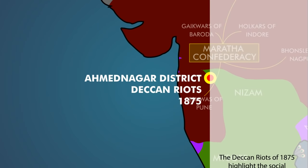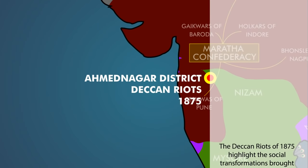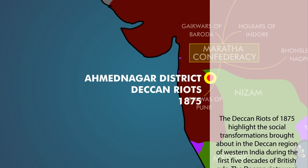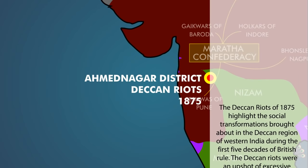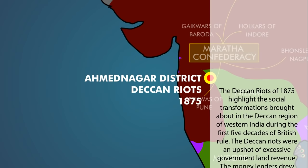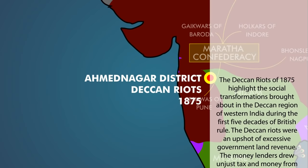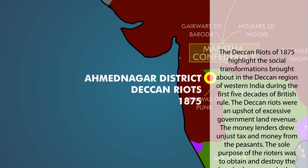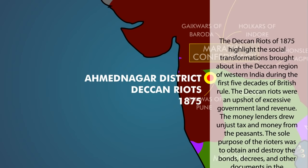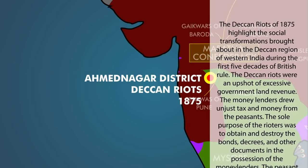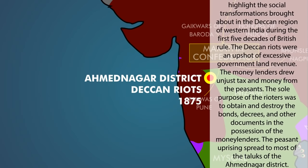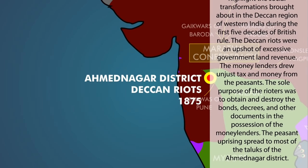The Deccan riots of 1875 highlight the social transformations brought about in the Deccan region of western India during the first five decades of British rule. The Deccan riots were an upshot of excessive government land revenue. The money lenders drew unjust tax and money from the peasants. The sole purpose of the rioters was to obtain and destroy the bonds, decrees and other documents in the possession of the money lenders. The peasant uprising spread to most of the taluks of the Ahmadnagar district.